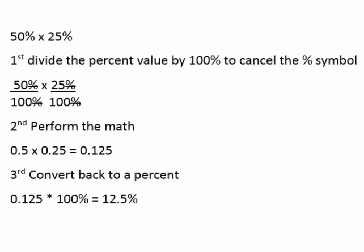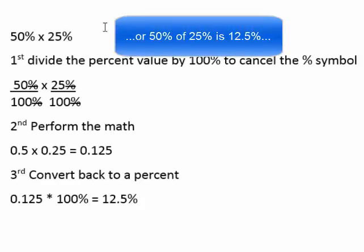0.5 times 0.25 would be 0.125. Then convert the decimal value back to a percent, multiplying 0.125 by 100% to get 12.5%. But you might see just by inspection that 25% of 50 is 12.5%.